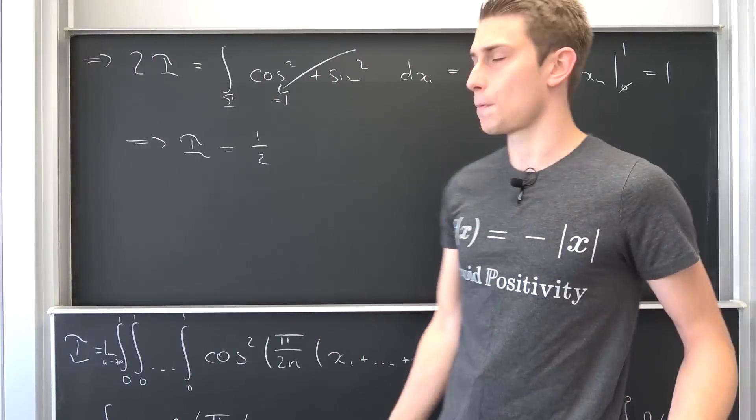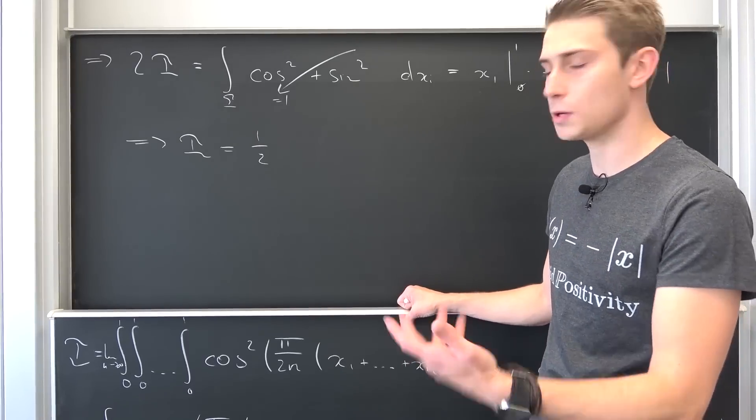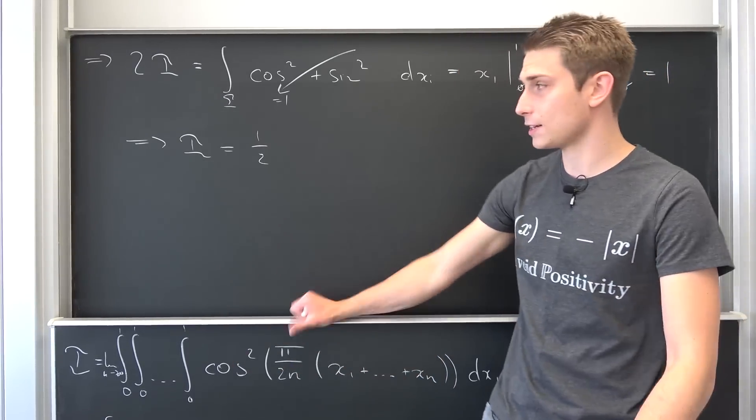So even in the limit, the limit of a constant is just a constant in itself. We are going to be left with exactly 1 half.